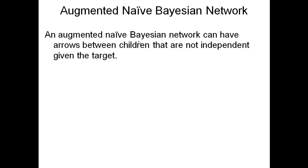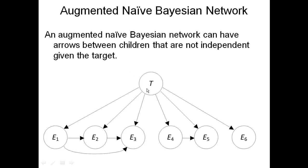A complication of the naive Bayesian network is called an augmented naive Bayesian network, and it can have arrows between the children. If some of the children are not independent given the target, you can create arrows between them. For example, E1, E2, and E3 are not mutually independent given the target, so there are arrows between them. E4 and E5 are not independent given the target either. If the effects are not independent given the target, this augmented structure more realistically models the joint probability distribution.